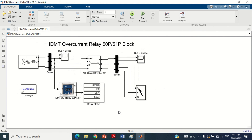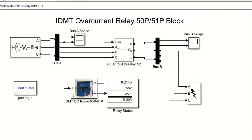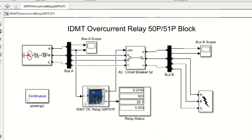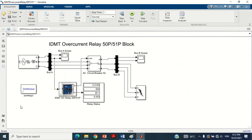Similarly, you can try to check the performance of this IDMT relay with different TMS and pickup current values. This model can be used to complete your bachelor degree final year project, or you can use this IDMT relay in any other standard IEEE model to perform overcurrent protection for your master degree research or PhD research objectives. For your convenience, I have uploaded the PDF as well as the IDMT relay Simulink model as a link in the description section of this video — you may download it from there. That's all for today's tutorial. If you like it, don't forget to like the video, subscribe to the channel, and share it with your friends. Thank you very much.